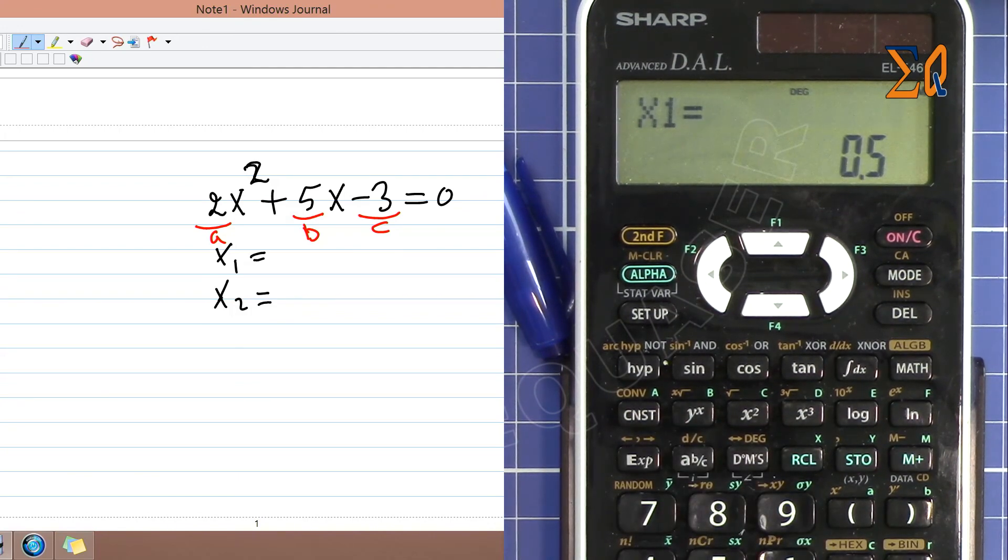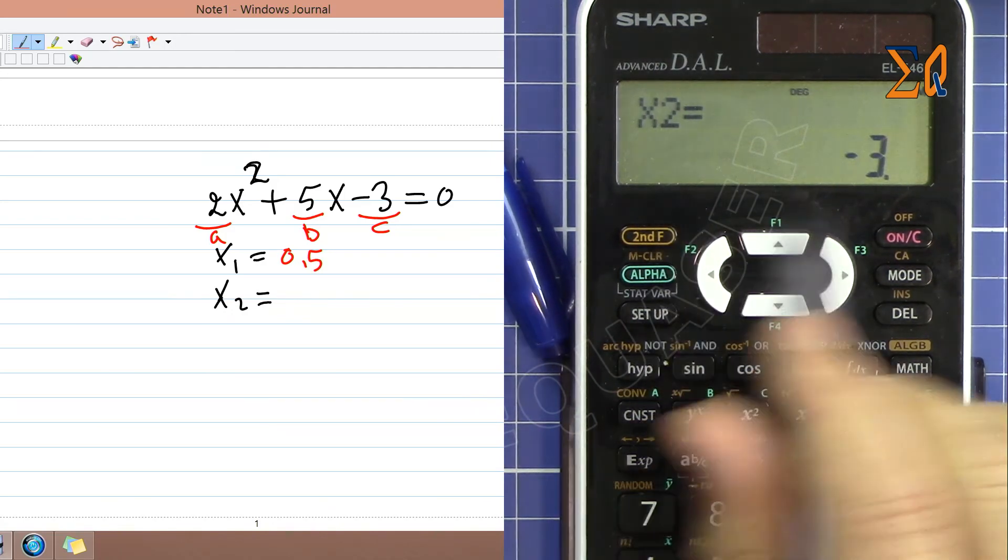So it says x₁ is 0.5, and press equal sign again, and x₂ is -3.